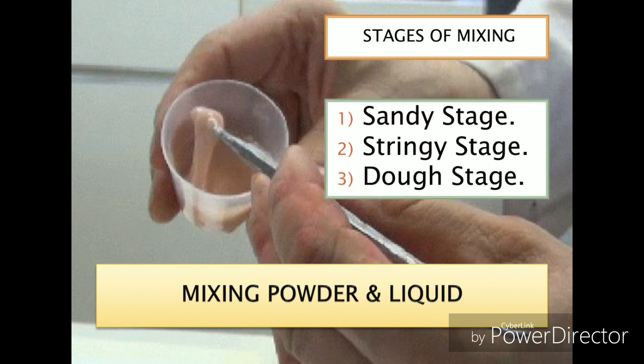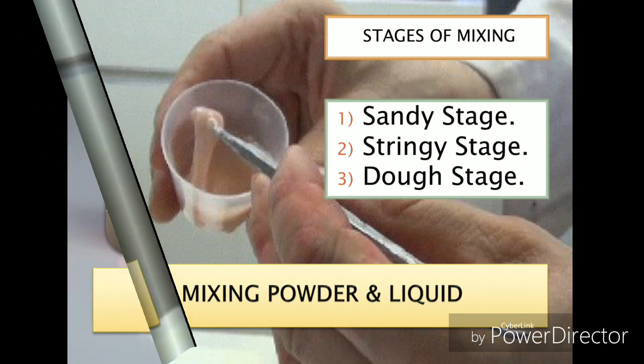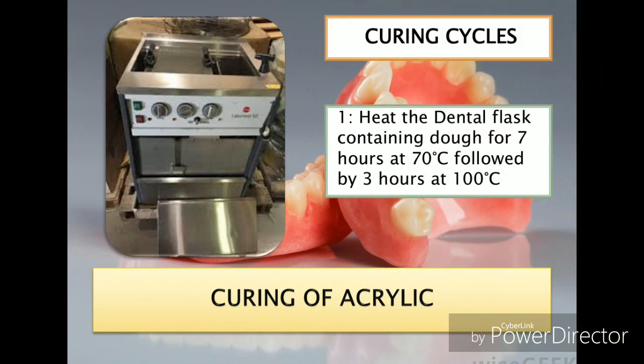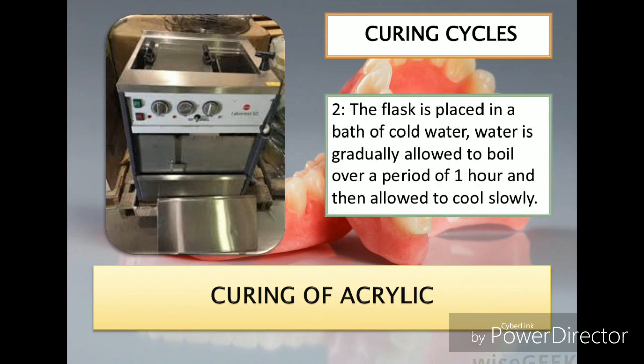Once the material gets hard, it reaches beyond the dough stage and it is impossible to pack the material into the dental flask. After packing, the curing is performed. There are different curing cycles recommended by the textbook. In the first cycle, we heat the dental flask containing the dough for seven hours at 70 degrees centigrade, then for the next three hours we raise the temperature to 100 degrees centigrade.